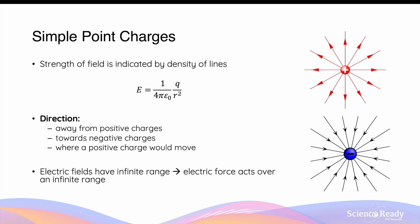Electric field strength is a vector quantity, which also has a direction. The direction of electric field lines is always drawn away from positive charges and towards negative charges. For a positive charge, electric field vectors are drawn away from it, and for a negative charge, the field vectors are drawn towards it.